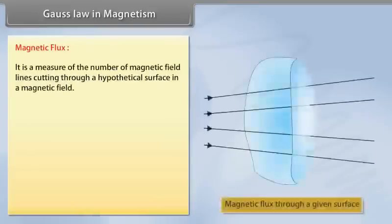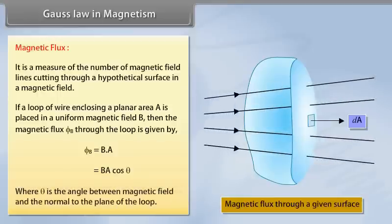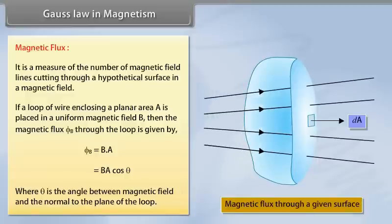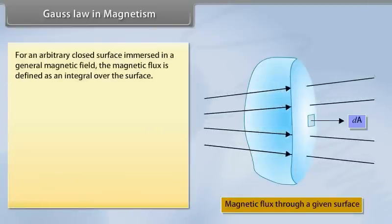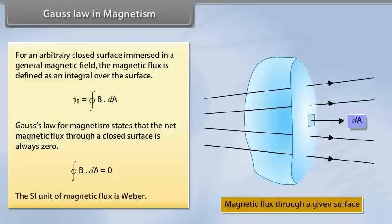Gauss's Law in Magnetism — Magnetic Flux: Magnetic flux is a measure of the number of magnetic field lines cutting through a hypothetical surface in a magnetic field. If a loop of wire enclosing a planar area A is placed in a uniform magnetic field B, the magnetic flux ΦB through the loop is given by ΦB = B · A = BA cos θ, where θ is the angle between the magnetic field and the normal to the plane of the loop. For an arbitrary closed surface, ΦB = ∮ B · dA. Gauss's law of magnetism states that the net magnetic flux through any closed surface is always zero: ∮ B · dA = 0. The SI unit of magnetic flux is the Weber.